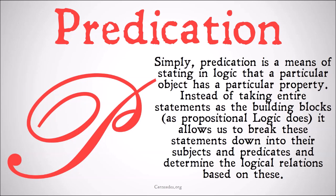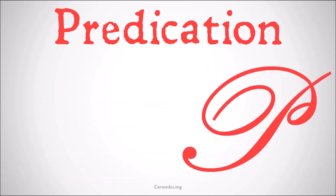Simply, predication is a means of stating in logic that a particular object has a particular property. Instead of taking entire statements as the building blocks, as propositional logic does, it allows us to break these statements down into their subjects and predicates and determine the logical relations based on these, adding categorical logic to propositional logic.